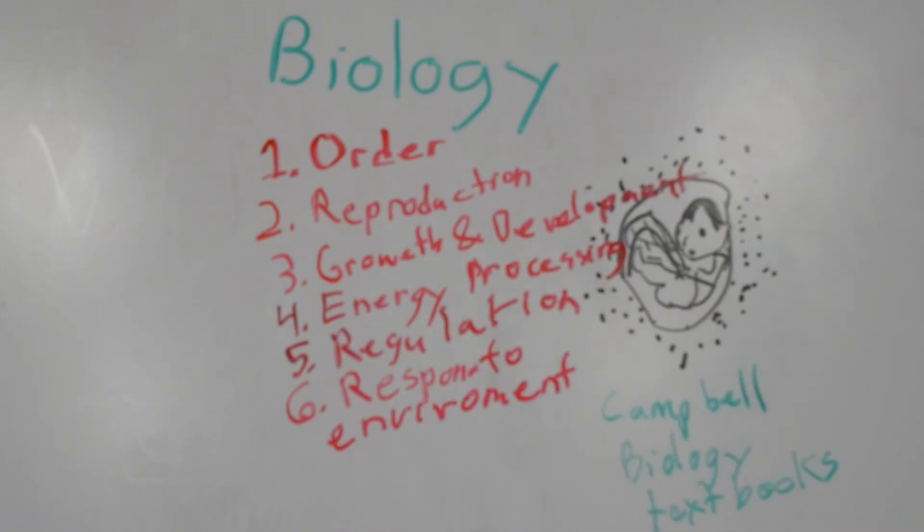our properties of life are order, reproduction, growth and development, energy processing, regulation, response to the environment, and evolutionary adaptation. Let's start with the first characteristic.